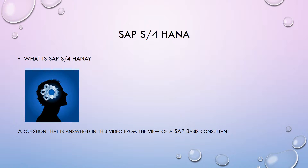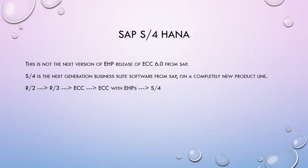The first question is: what is SAP S4 HANA? There is a common misunderstanding that S4 is the next version or EHP release of ECC 6.0 from SAP, but that is not true. S4 is the next generation business suite software from SAP — a completely new product line. We all know SAP started with R2, then R3, then ECC with different EHP versions on top, and as a continuation of this the next release is called S4.